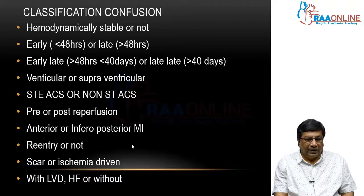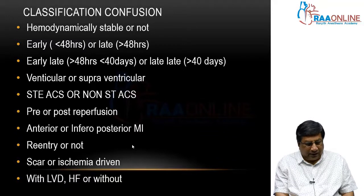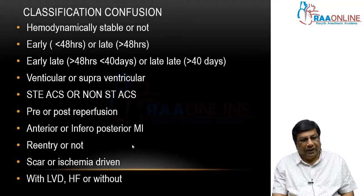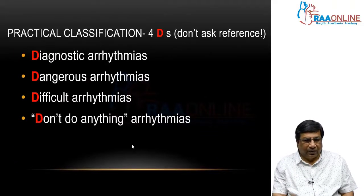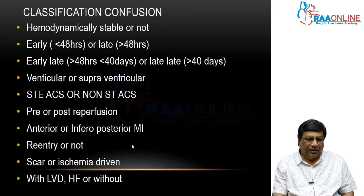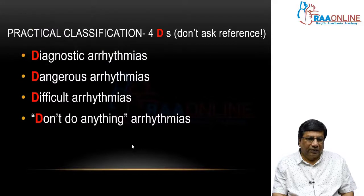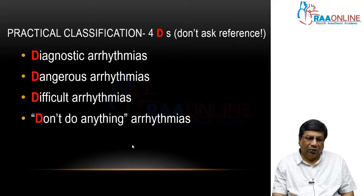All this information is necessary to appropriately diagnose first and then manage the arrhythmia in Acute Coronary Syndrome. Because of this huge classification confusion, I thought we'll remember just four D's — and this is devised on our own, so don't ask for any reference here.